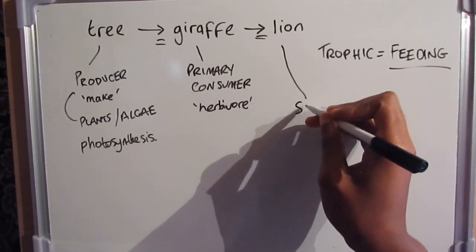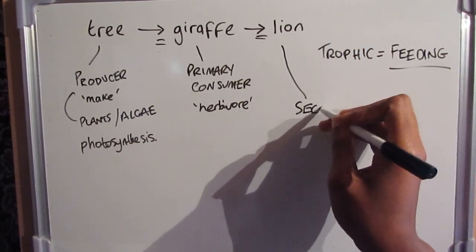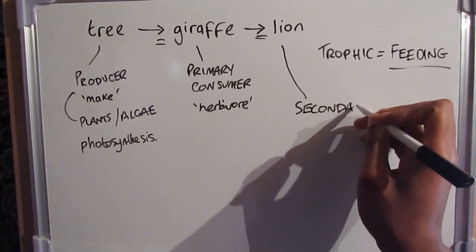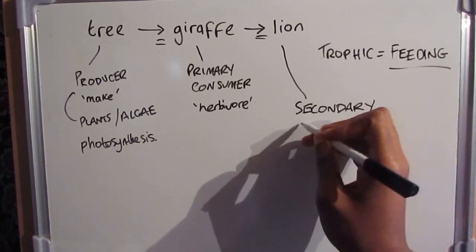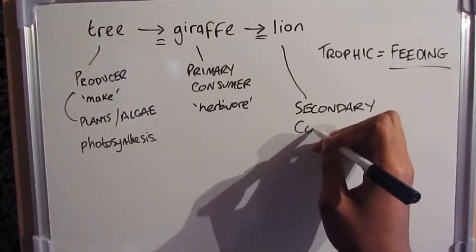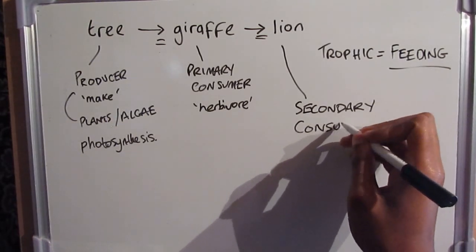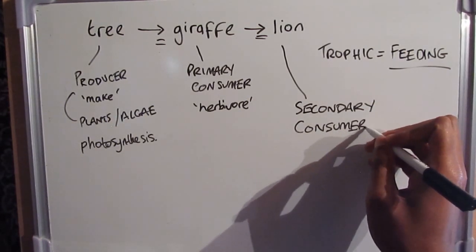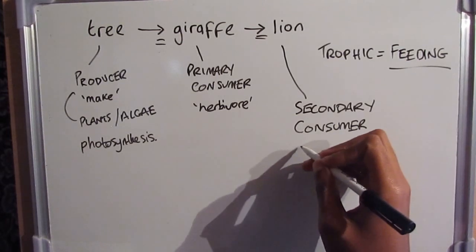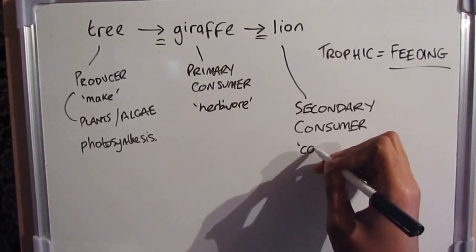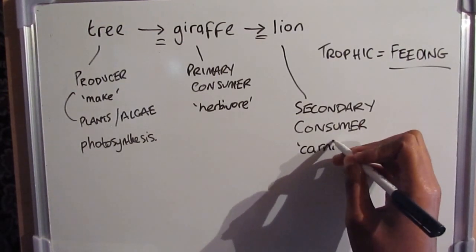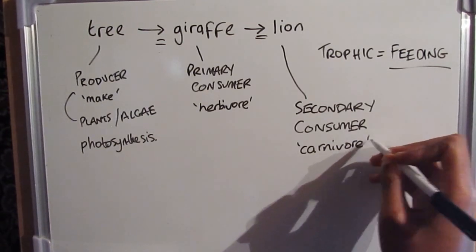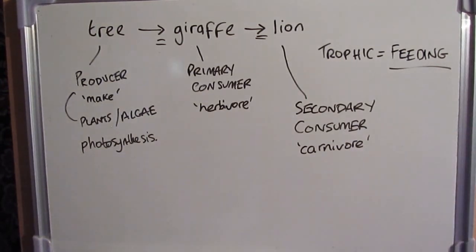The lion eats the giraffe, so the lion eats the primary consumer. We call the lion the secondary consumer. Because the lion isn't eating the plant directly but instead eats another meat-containing organism, we call the lion a carnivore.